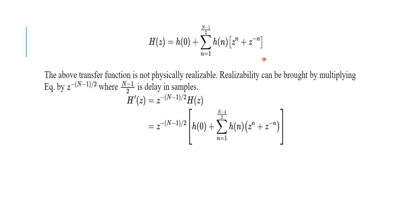This form is not physically realizable. In order to make it a realizable filter, we multiply the entire equation by z^(−(N−1)/2), where (N−1)/2 is the delay in samples. Finally, the realizable h(z) is obtained by multiplying the previous h(z) by z^(−(N−1)/2) to get the causal transfer function.